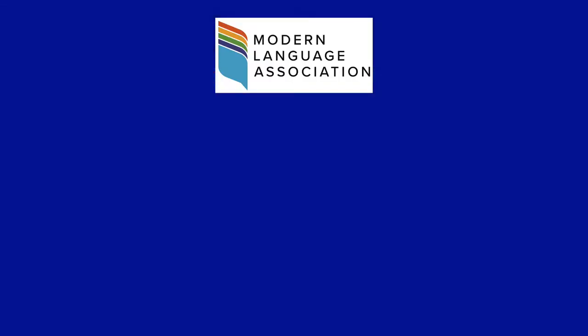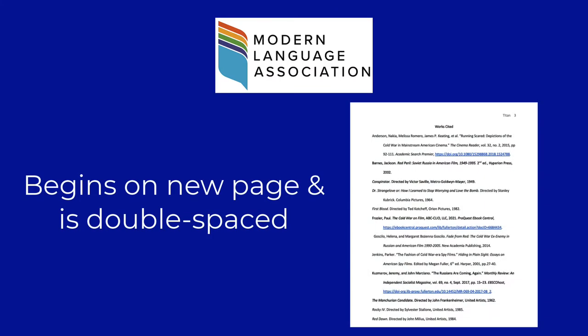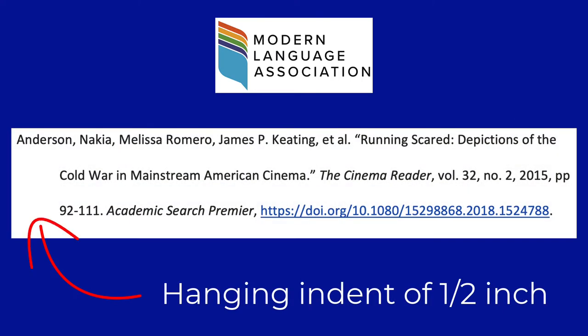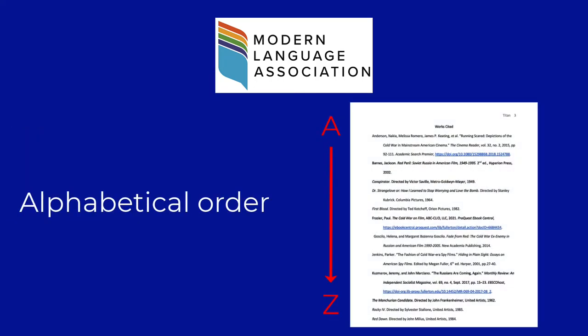Some other notes about the Works Cited page: the list begins on a new page and is double-spaced, just like the rest of your paper. References that take up more than one line will feature a hanging indent. This list is arranged in alphabetical order.